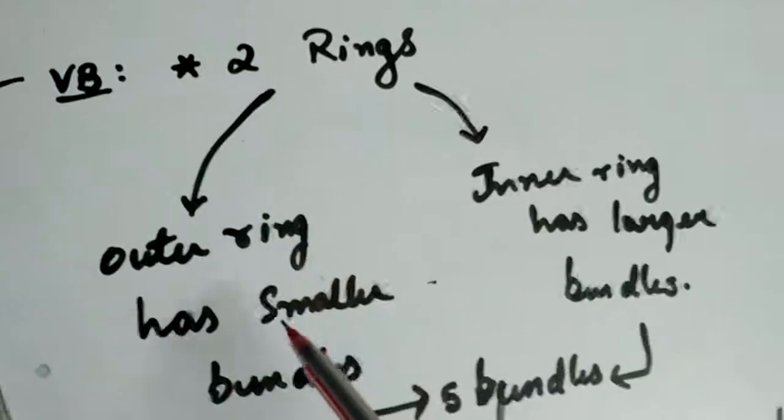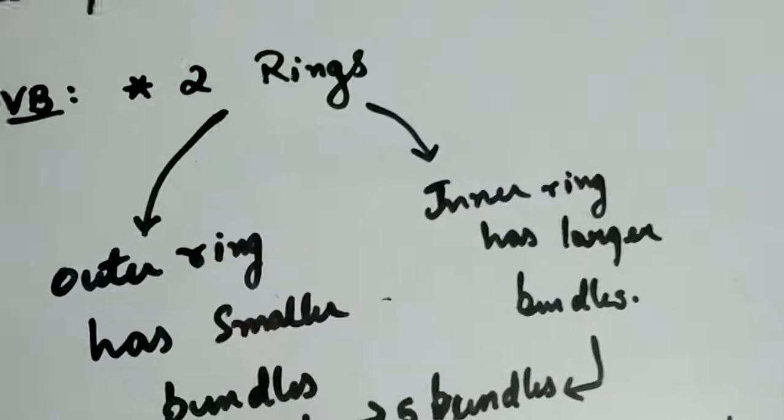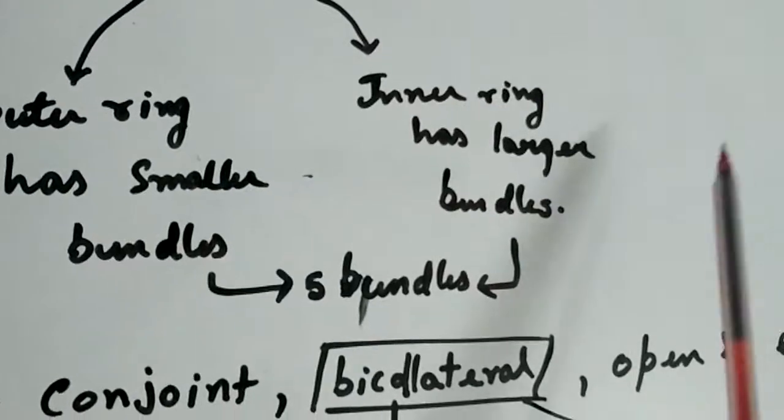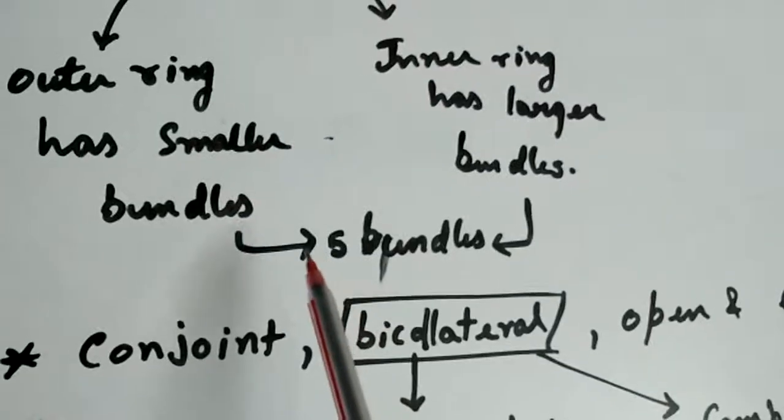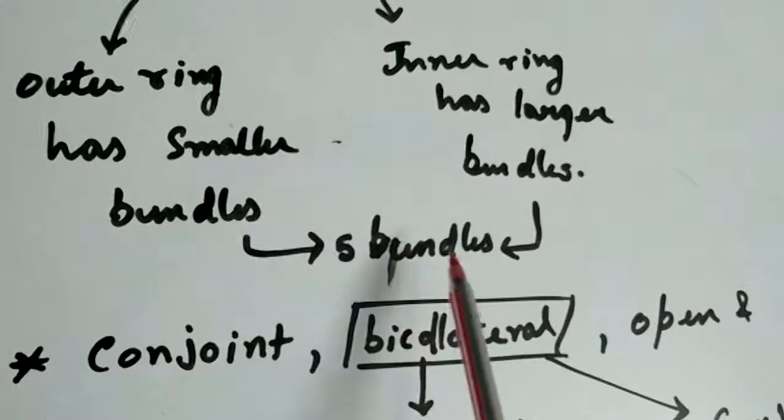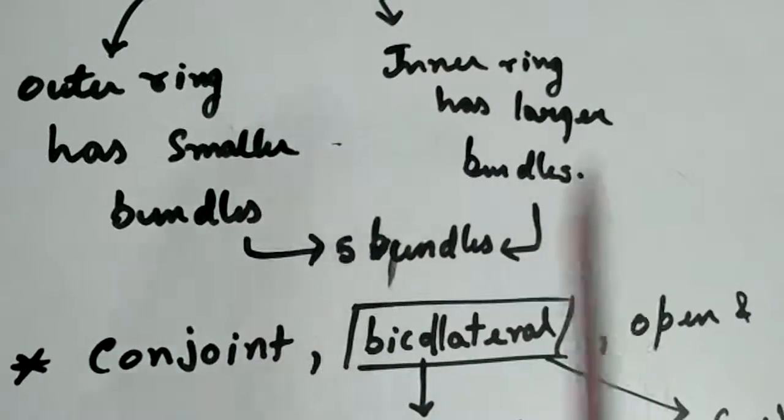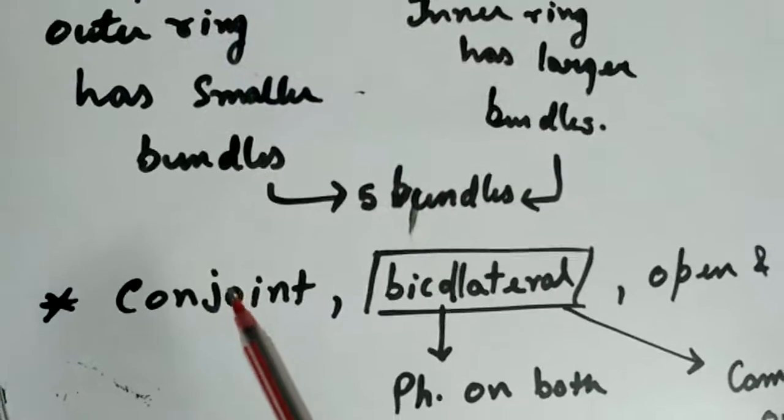So vascular bundles have two rings. Outer ring has smaller bundles and inner ring has larger bundles. Total five vascular bundles are present in each of the rings.